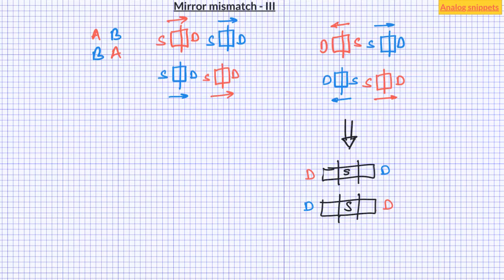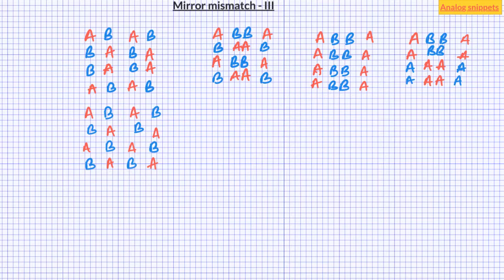Now if there are more than two unit devices in each transistor then number of common centroid implementations become very large. For example if we have 8 unit devices in each transistor then these are some of the possibilities. So the rule that I follow is to make the common centroid for the smallest unit possible. So for example if I look at these two implementations then the units of 4s are not in common centroid. So I would not prefer these two implementations. Out of these three all the outer 4 units are in common centroid but notice that the inner 4s are still not in common centroid. So my preference would be this topology.